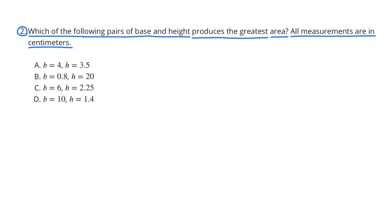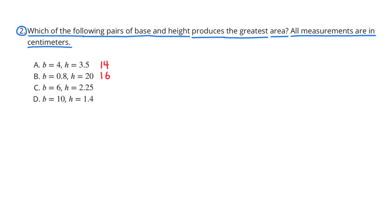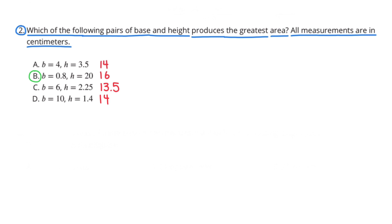Number 2. Which of the following pairs of base and height produce the greatest area? All measurements are in centimeters. For figure A, base times height equals 14 square centimeters. Figure B, base times height equals 16 square centimeters. Figure C, base times height equals 13.5 square centimeters. Figure D, base times height equals 14 square centimeters. Figure B has the greatest area at 16 square centimeters.